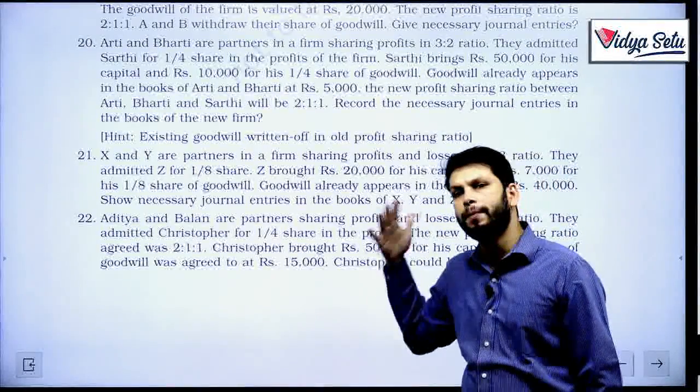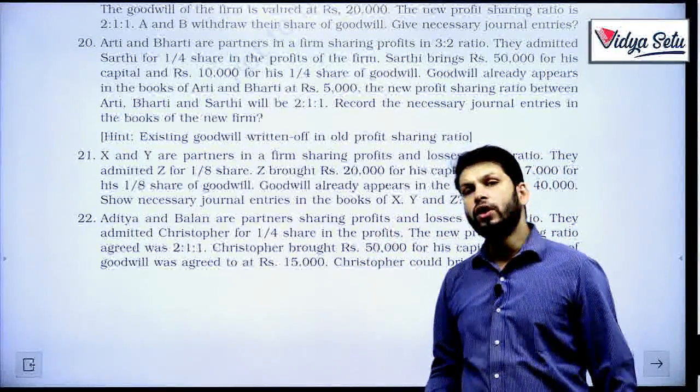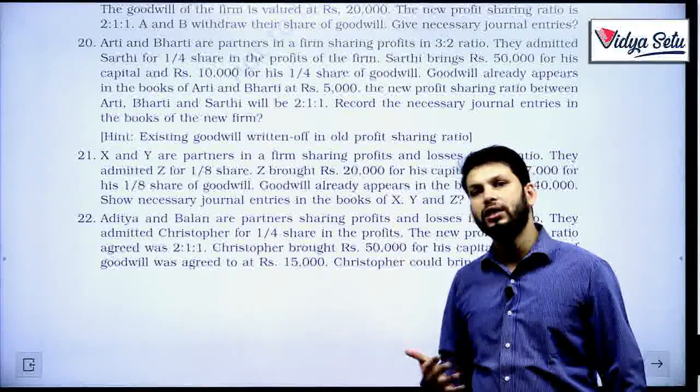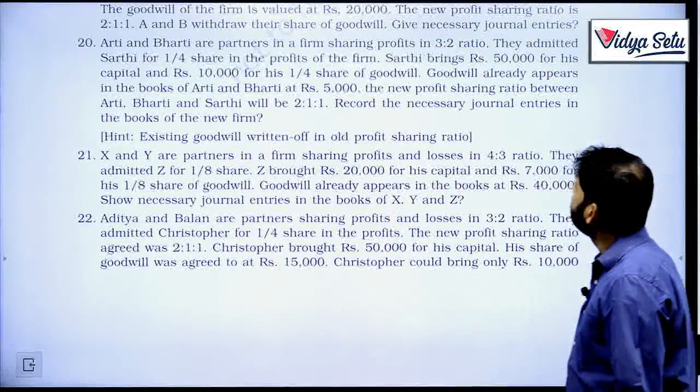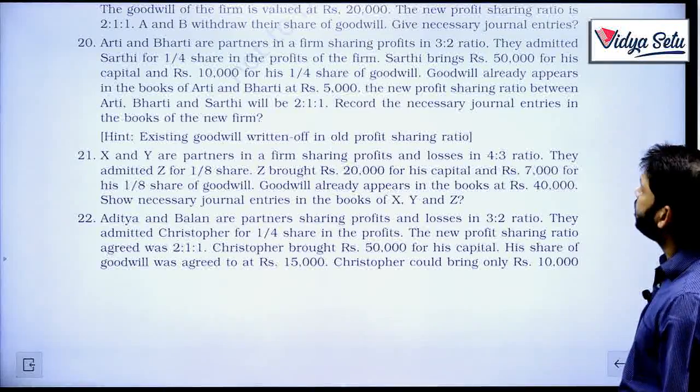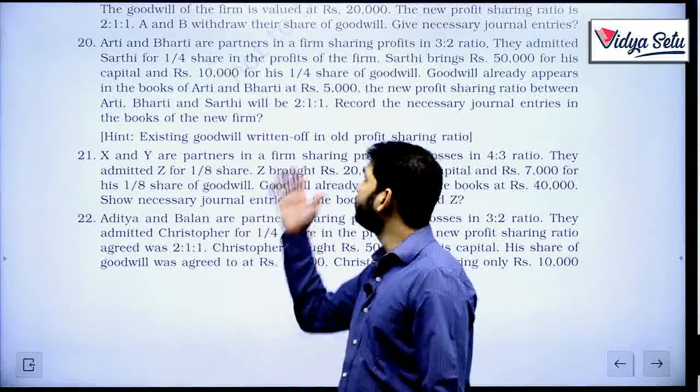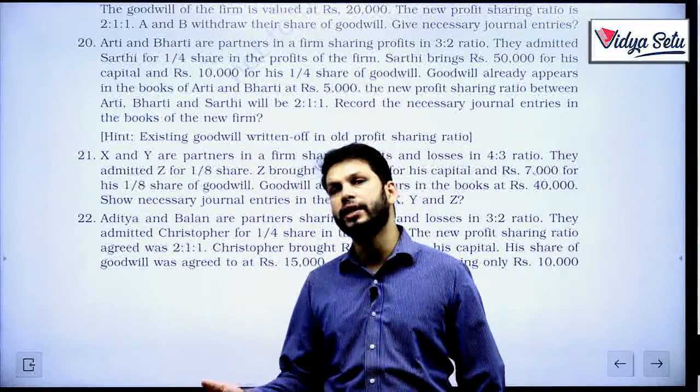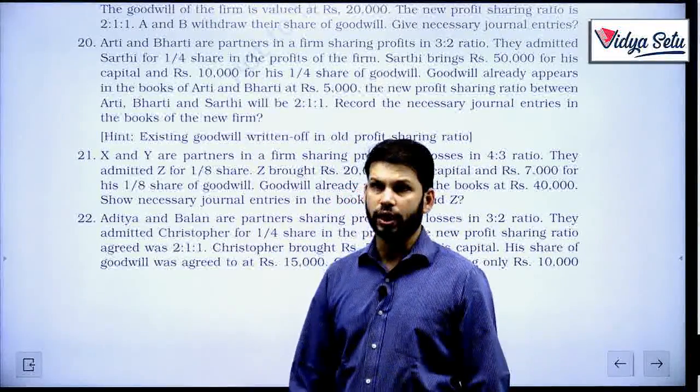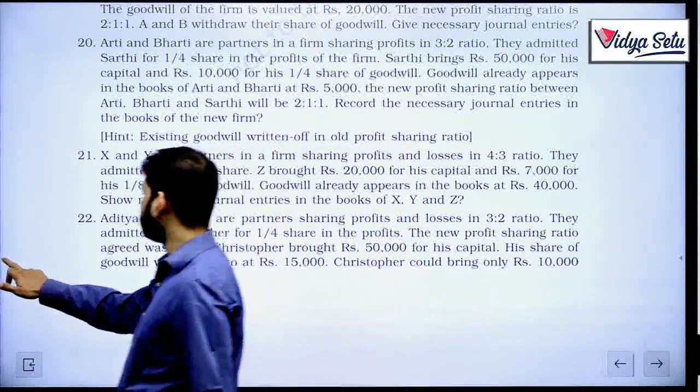I told you whenever goodwill already appears, first we need to write it off in the old partners in the old ratio. The new profit sharing ratio between Aarti, Bharti, and Sarthi will be 2 to 1 to 1. Record the necessary journal entry. We have the old ratio, we have the new ratio, we can find the sacrificing ratio. Let's look at how to solve this.